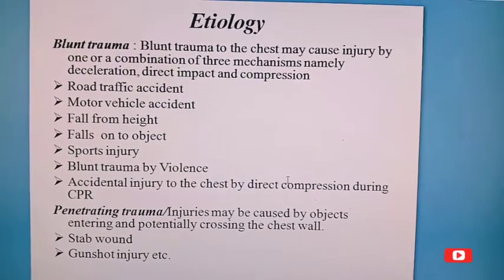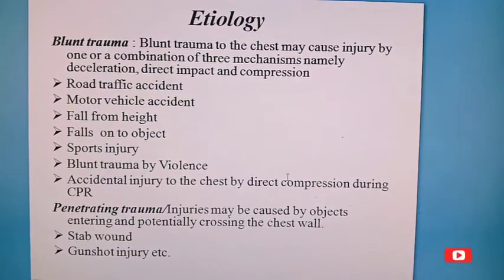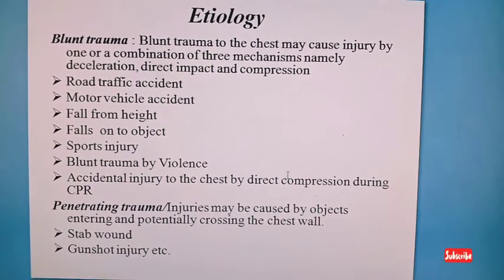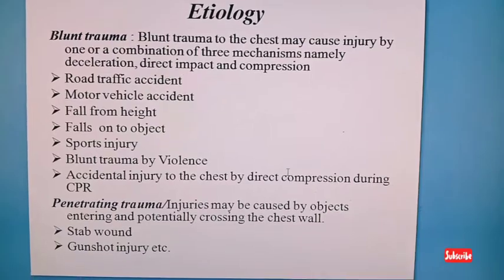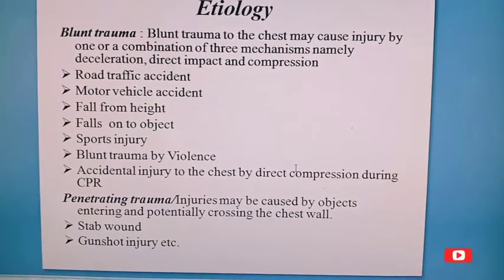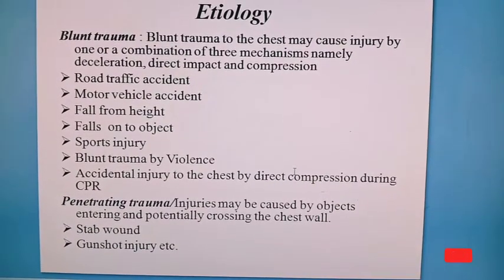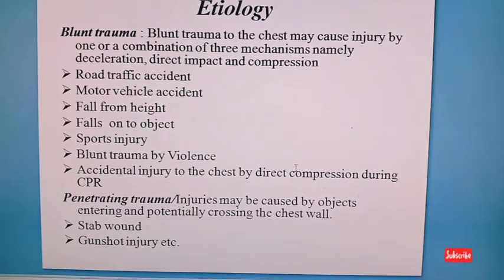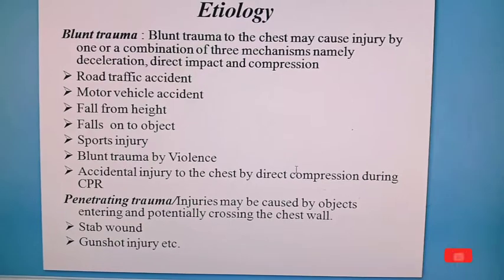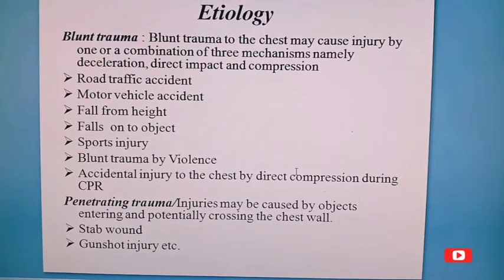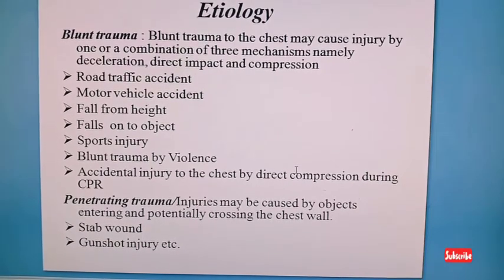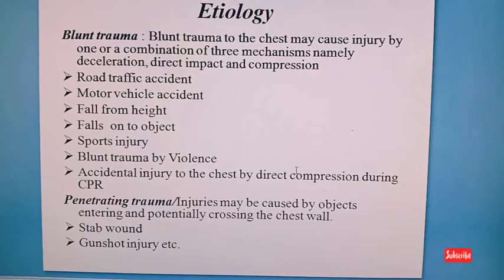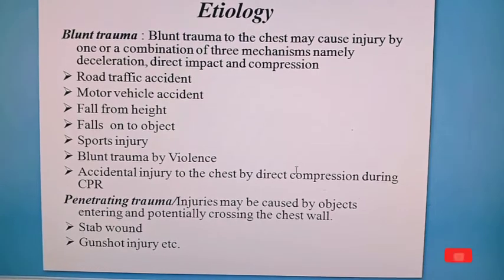The etiology of chest injury: mainly two types of trauma cause chest trauma — one is blunt trauma and another is penetrating trauma or injury. Blunt trauma to the chest may cause injury by one or a combination of three mechanisms: deceleration, direct impact, and compression.